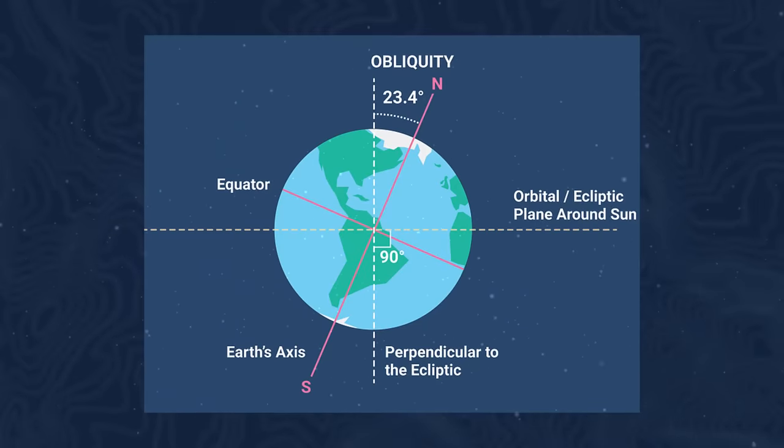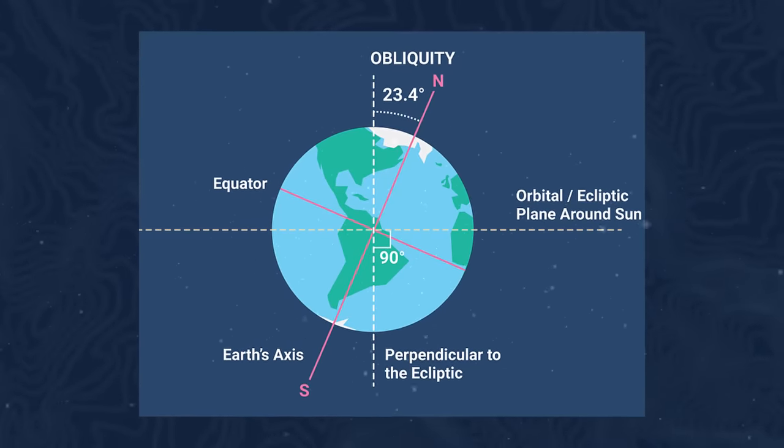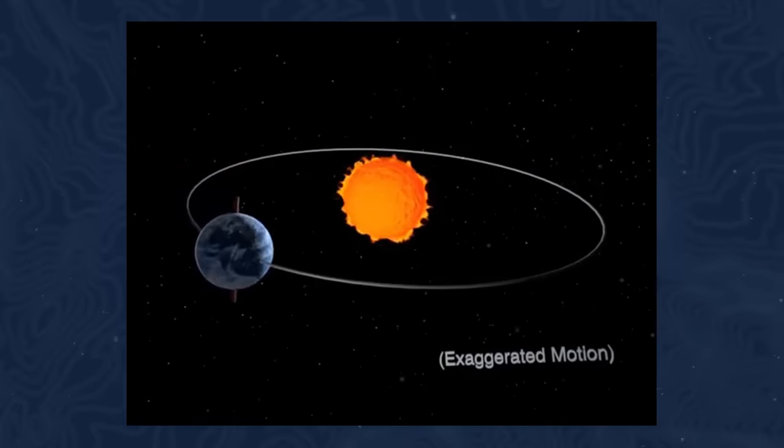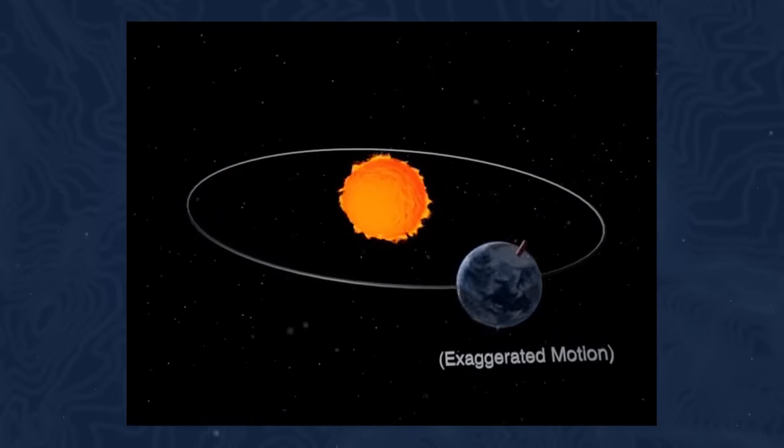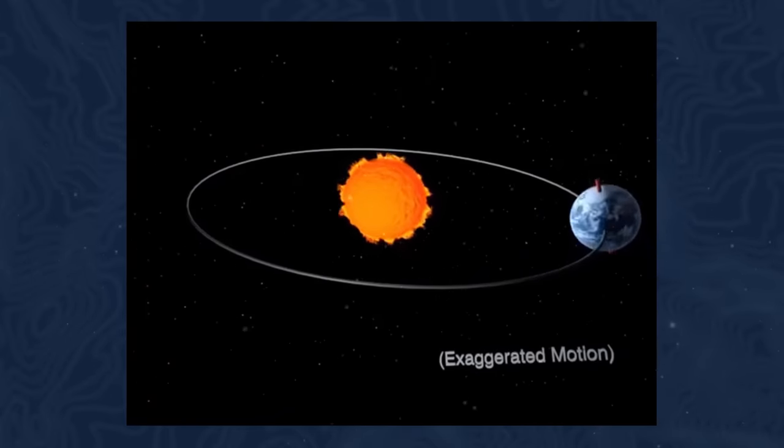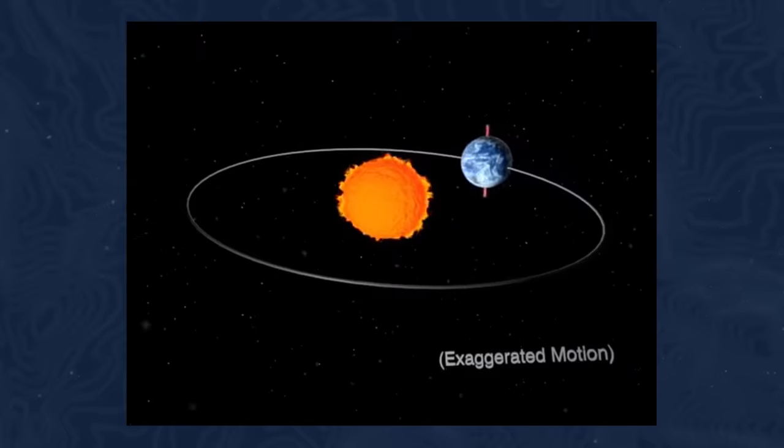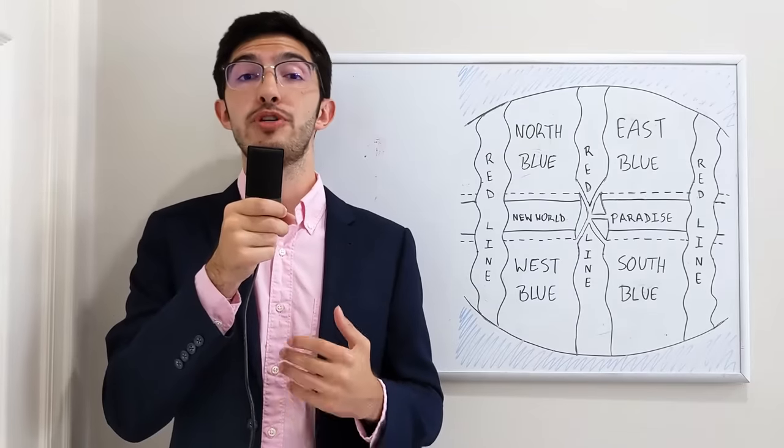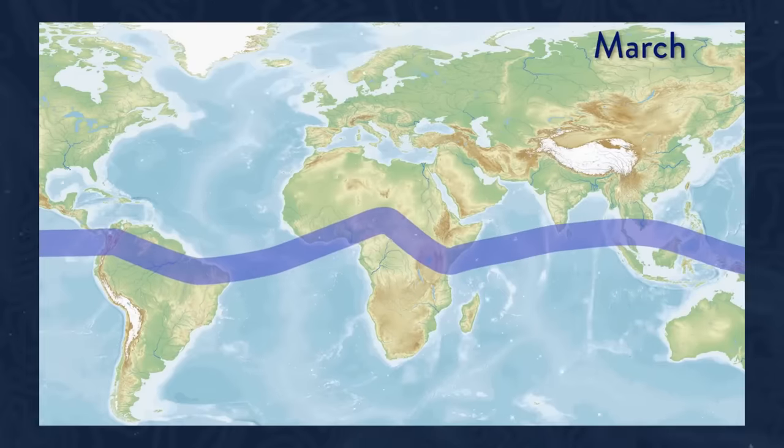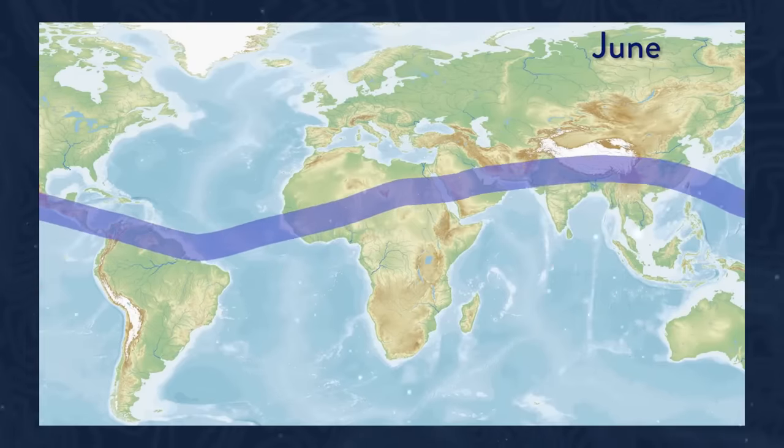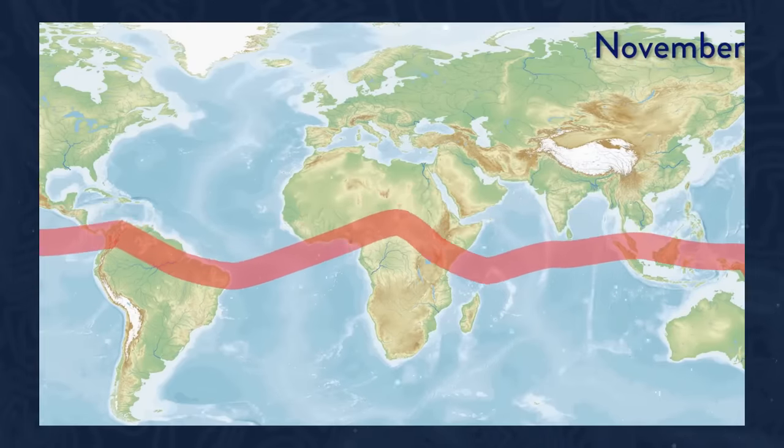But because of the tilt of the Earth on its rotation axis, which is of about 21 to 24 degrees, as the Earth goes around the sun throughout the year, the angle at which the sun hits the tropics slightly changes, and therefore slightly changes also the intensity and the amount of the solar radiation coming in. The result is that the Intertropical Convergence Zone oscillates slightly north and slightly south throughout the year, such that even within the tropics there is some semblance of seasons.